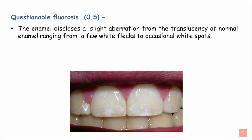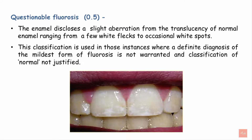Moving on to questionable fluorosis with a score of 0.5. The enamel discloses a slight aberration from the translucency of normal enamel, ranging from a few white flakes to occasional white spots. This classification is used in instances where a definite diagnosis of the mildest form of fluorosis is not warranted and classification of normal is also not justified.